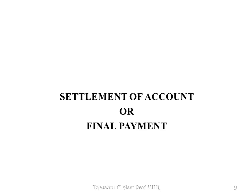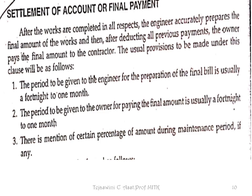Now we will see what is Settlement of Account or Final Payment. After the works are completed in all respects, the engineer accurately prepares the final amount of the work. After deducting all previous payments, the owner pays the final amount to the contractor. The engineer will calculate the final amount, give it to the client, who will then deduct all previous payments and pay the contractor.